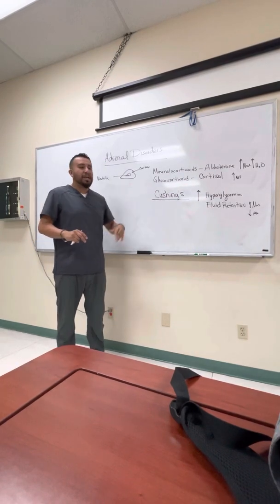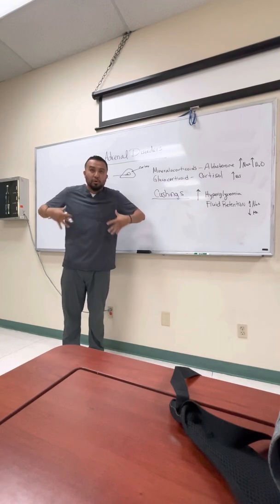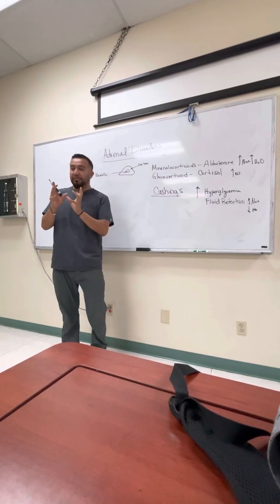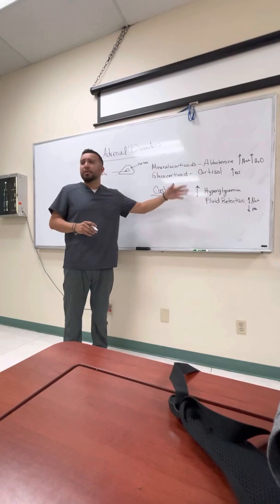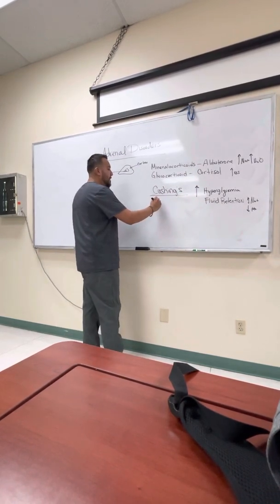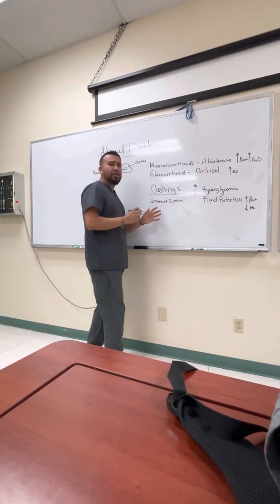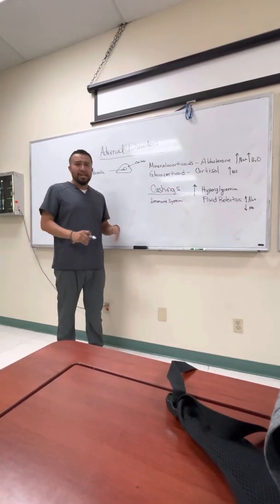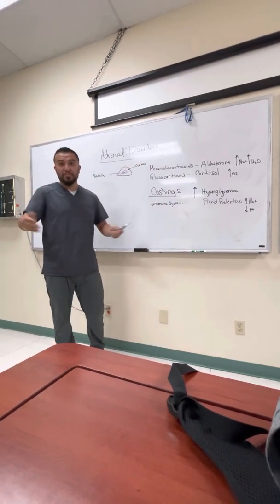People with Cushing's syndrome have truncal obesity — they're heavy in the torso area but their arms are relatively thin. Remember that particular feature because it's exclusive to this condition. When you're very stressed out, your immune system gets compromised, so these patients will also have depressed immunity. You can address this by stopping the patient from going to crowded places, ensuring a clean environment, and assessing them frequently for hyperthermia.